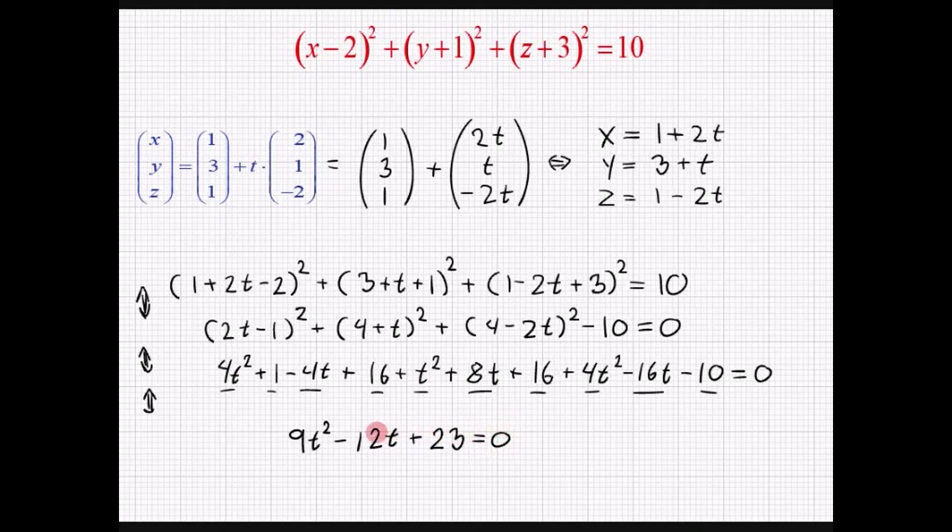Vi skal altså finde den t værdi der gør at ligningen her bliver 0. Og vi kan se at det er en andengradsligning. Så der kan være to t værdier der gør at ligningen bliver lige 0.